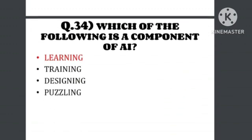Question number 34: Which of the following is a component of an artificial system? The component of an artificial system is learning — learning is the answer.